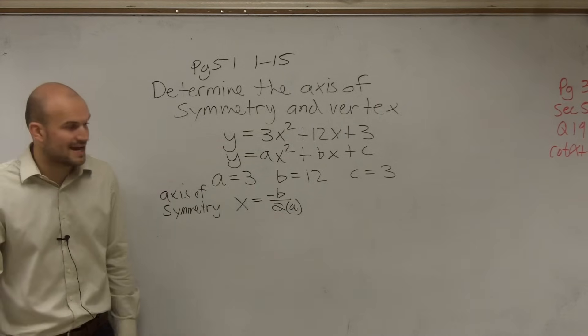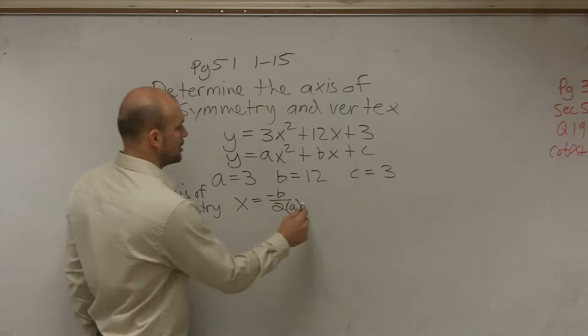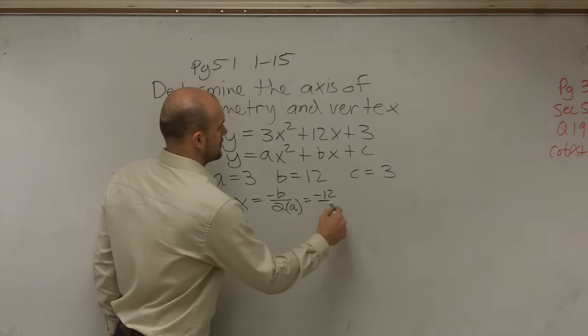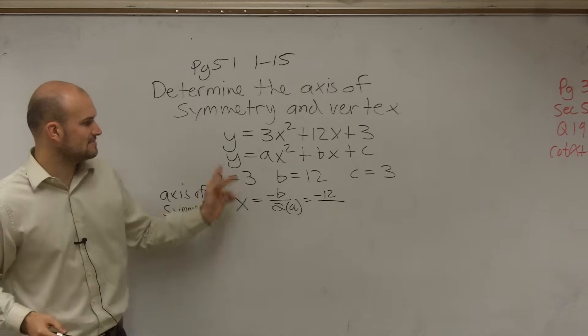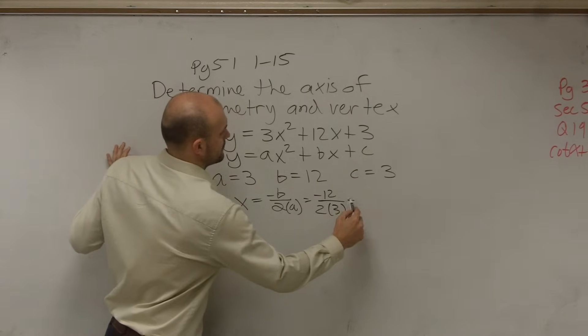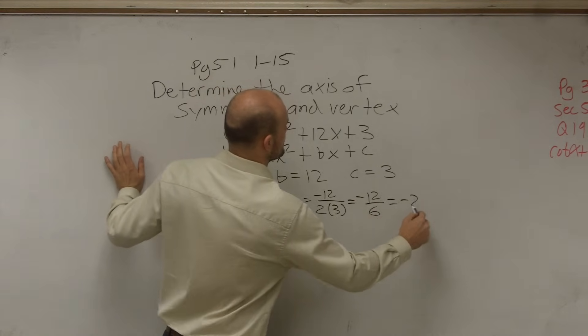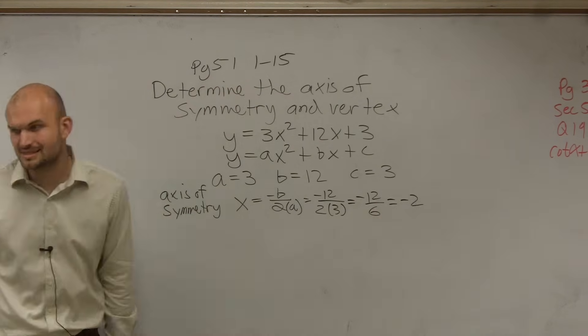So all I'd like you guys to do to find the axis of symmetry is just take the opposite of b, which would be negative 12, divided by 2 times a. Well, 2 times a is 2 times 3. Therefore, it's negative 12 divided by 6, which equals negative 2. And about half the class got to this point.